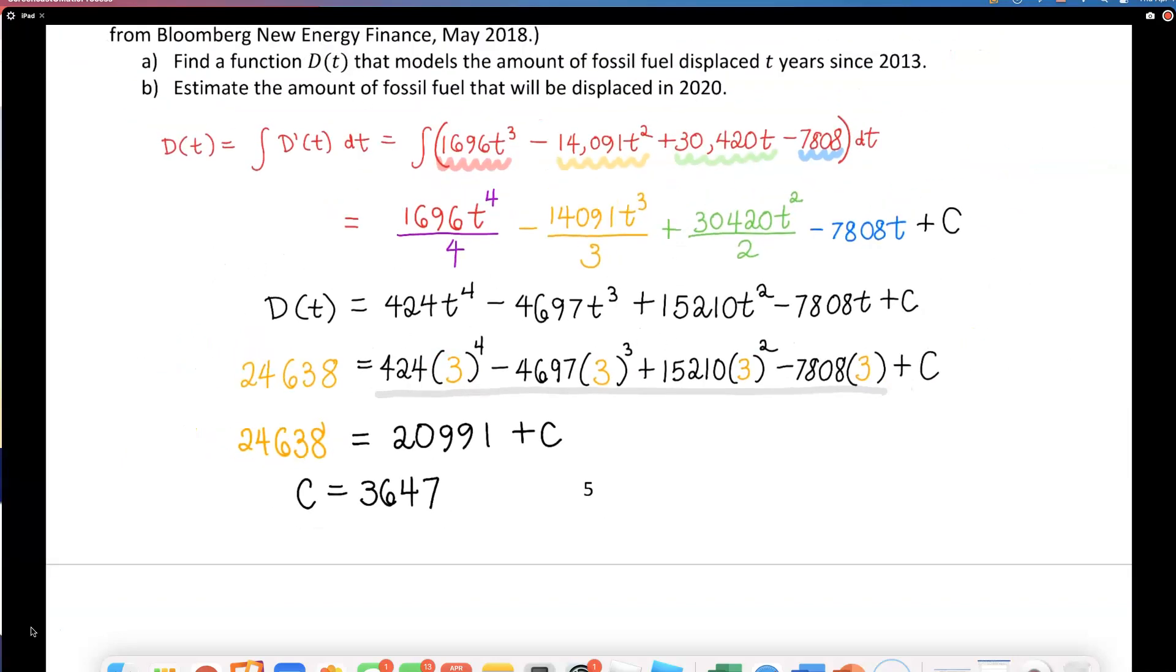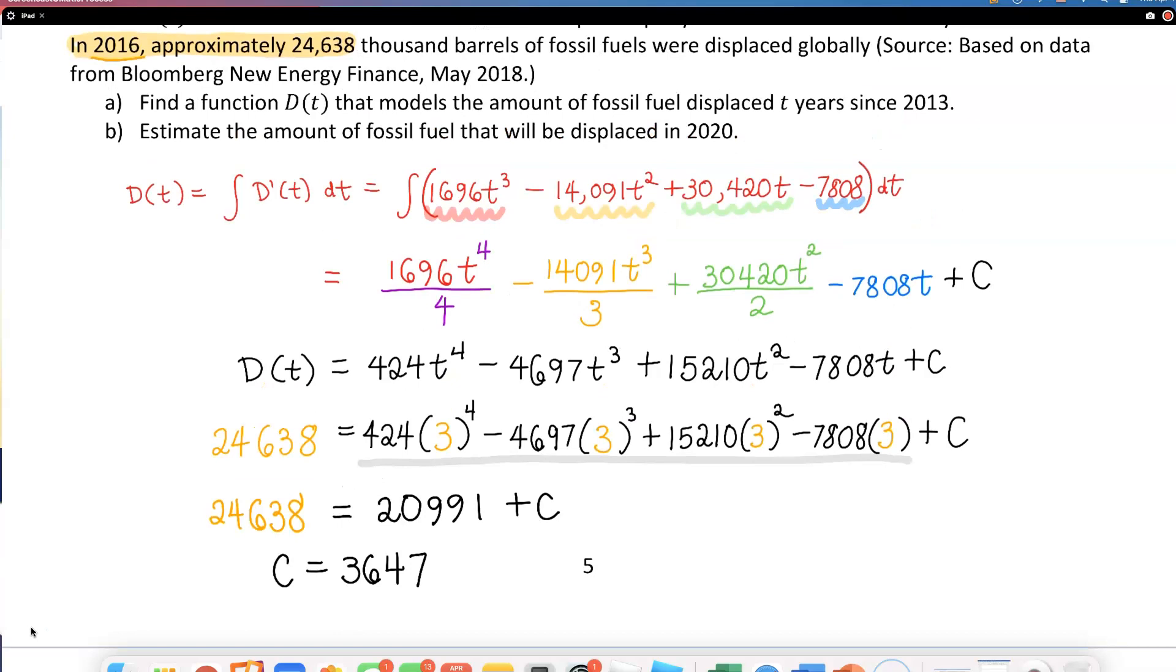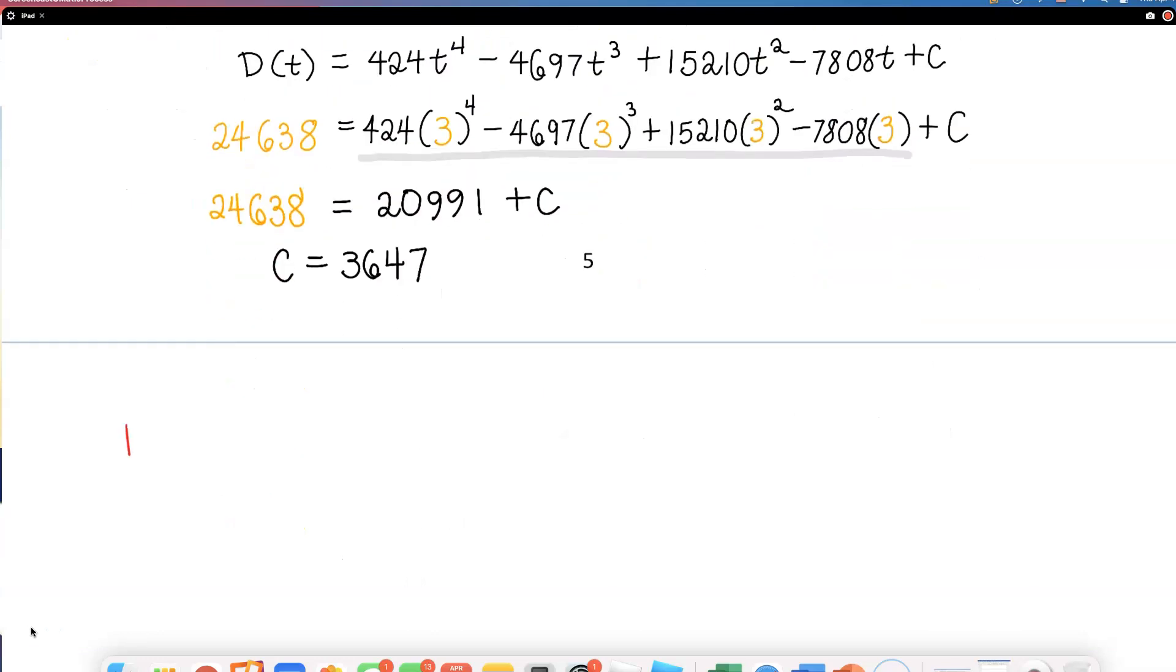So we can write the D(t) function. D(t) equals 424t⁴ minus 7697t³ plus 15,210t² minus 7808t plus our beautiful C of 3647. We found the function, which is what part A was asking.